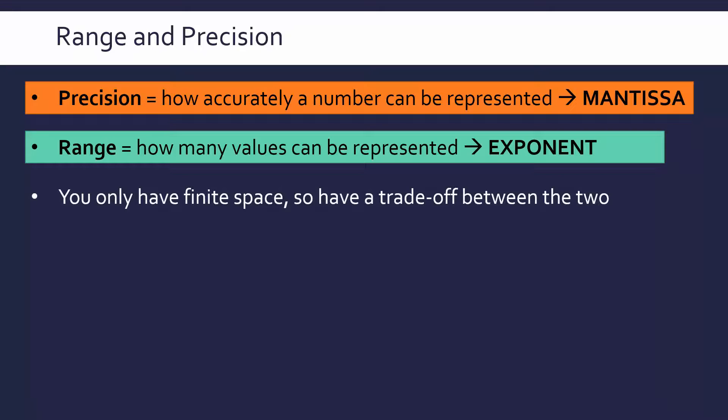The issue is, in an ideal world you can just have massive mantissas and massive exponents, but in reality, we've only got finite space in memory. So we've got to limit it at some point. We've got to have a trade-off between our precision and our range.